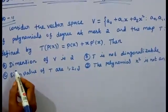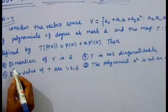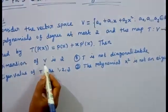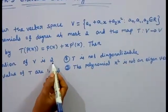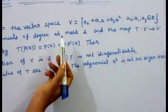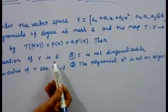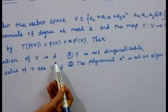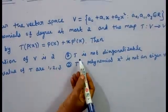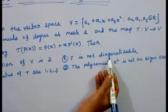The first option: dimension of V is 2. The second option: T is not diagonalizable.